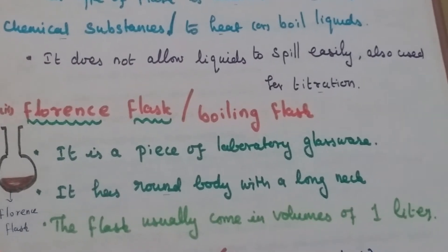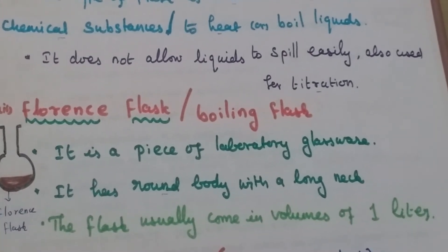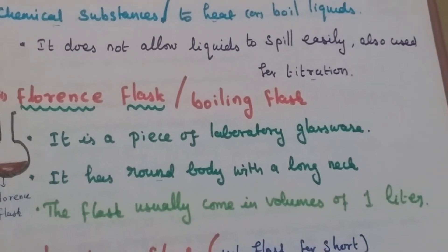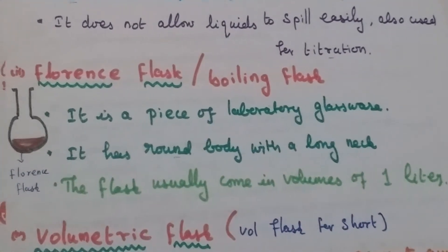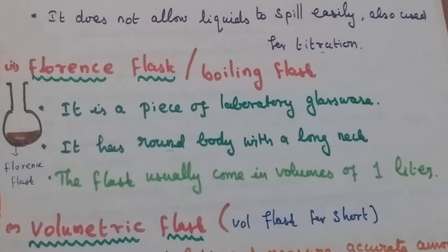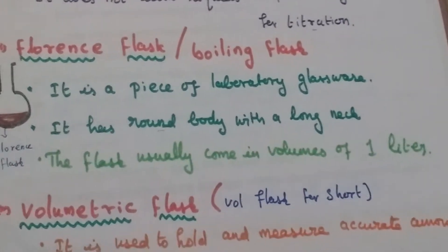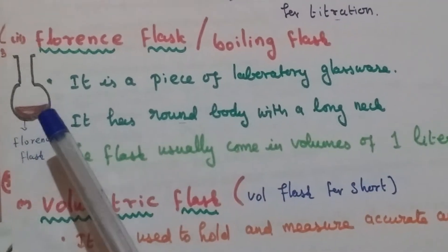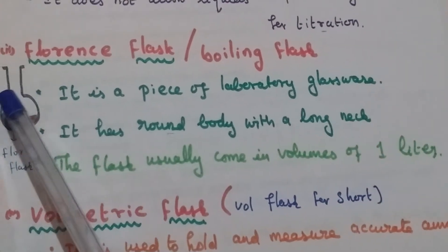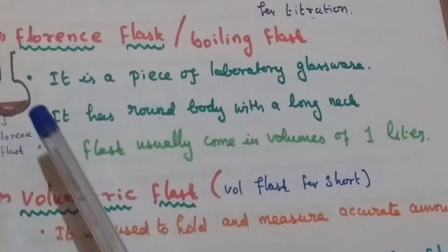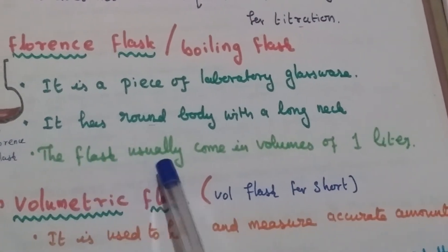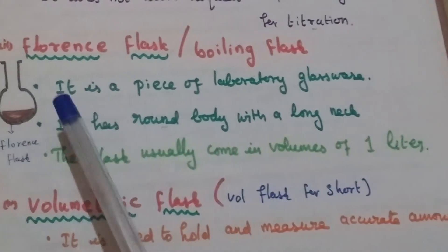Second is the Florence flask, also called a boiling flask. It has a round body with a long neck. The flask usually comes in volumes of 1 liter.